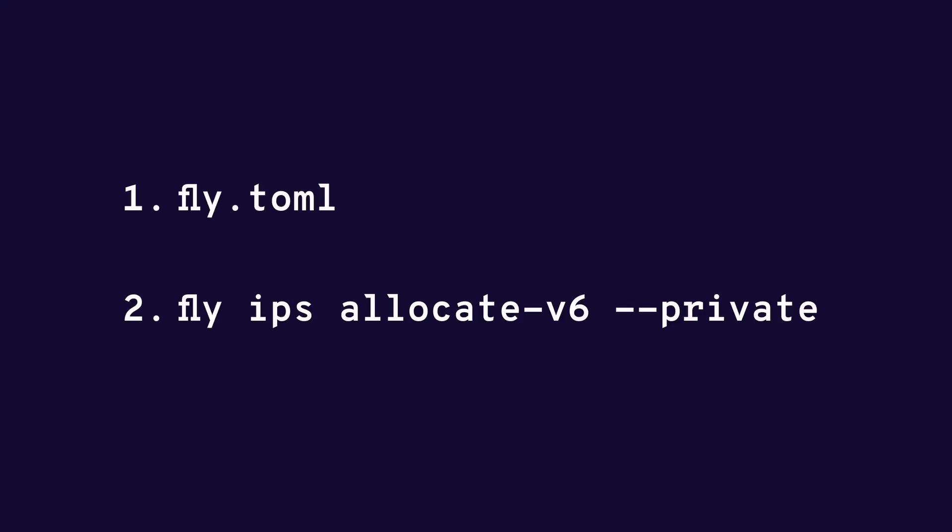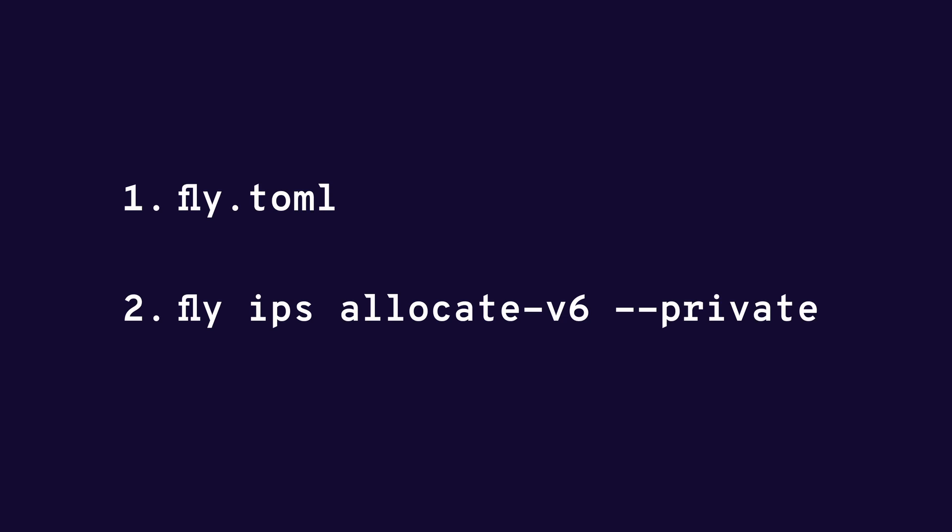You now have a fully functioning self-hosted LLM on fly.io. To recap: all you have to do is configure your fly.toml and allocate an IPv6 address. Then just remember to access the app through a .fly.cast address and you're good to go.